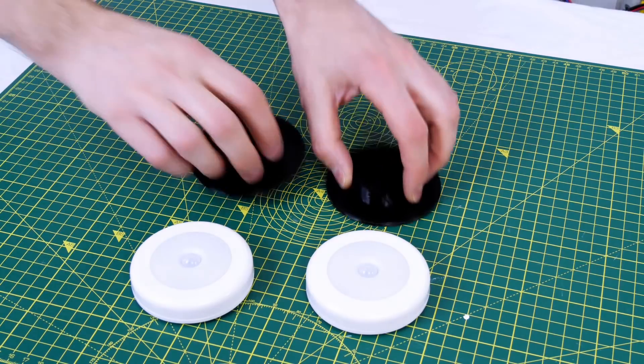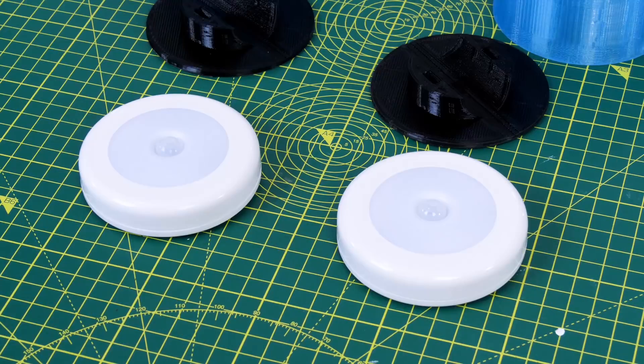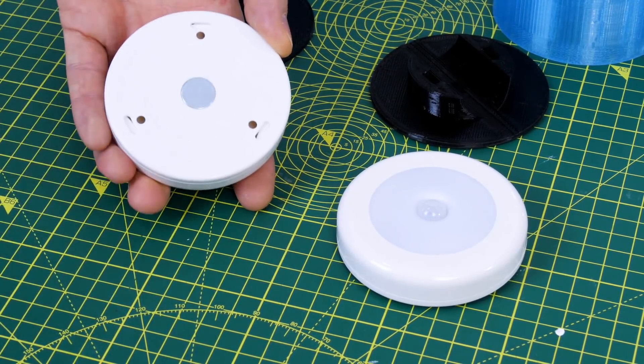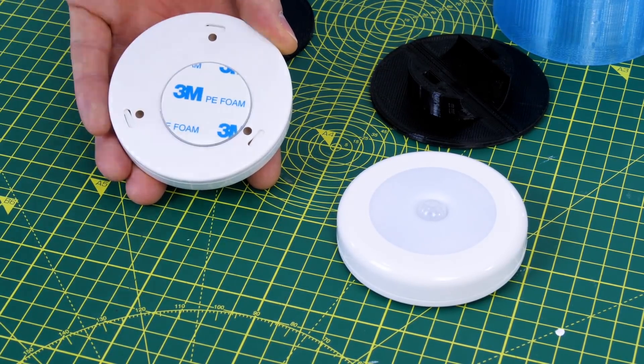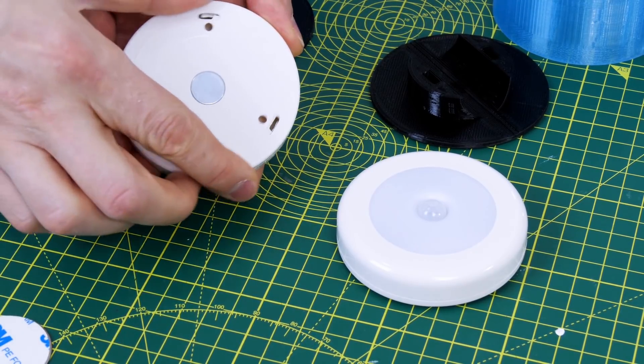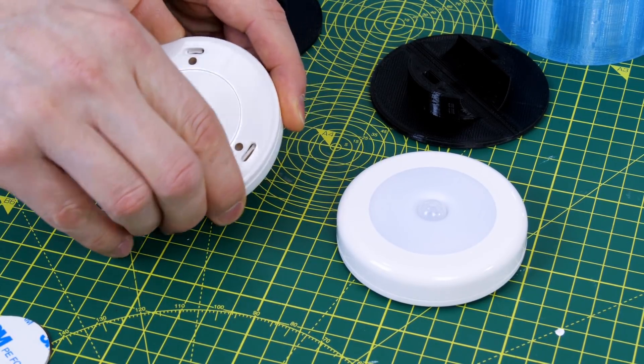I found these cupboard lights on Amazon which are movement activated. Each one comes with a magnet on the back for mounting and also a magnetic plate with a 3M sticky pad on. Each one takes three AAA batteries.